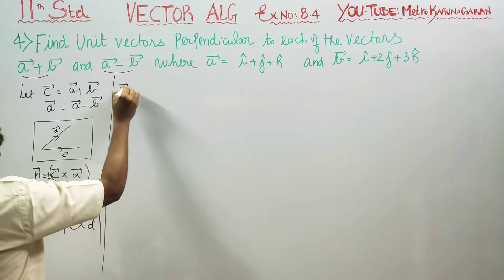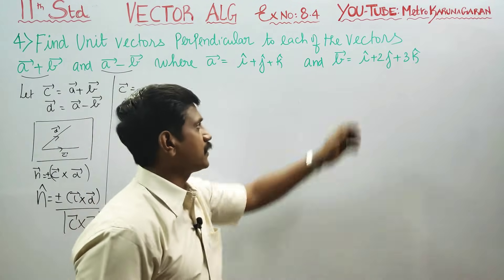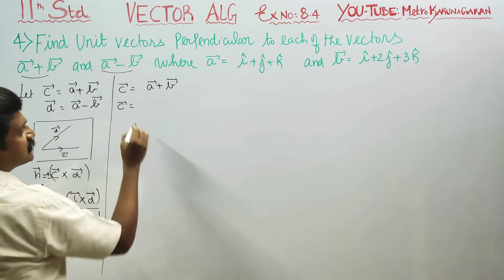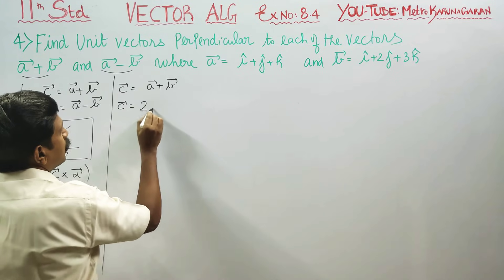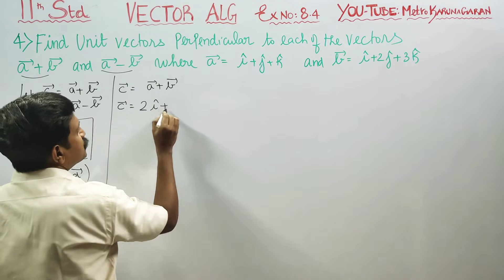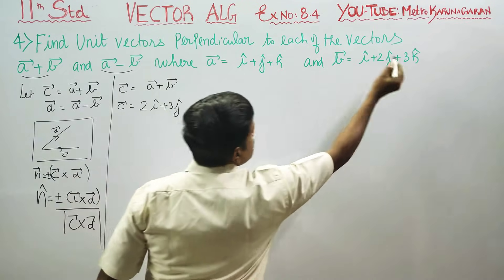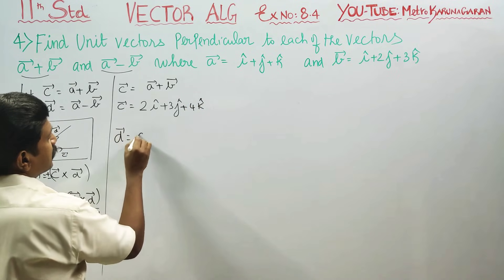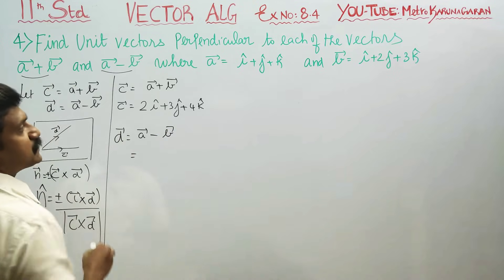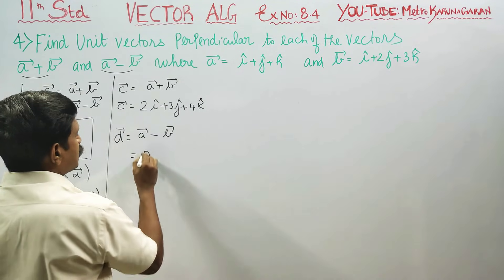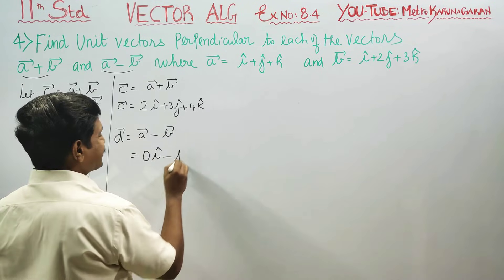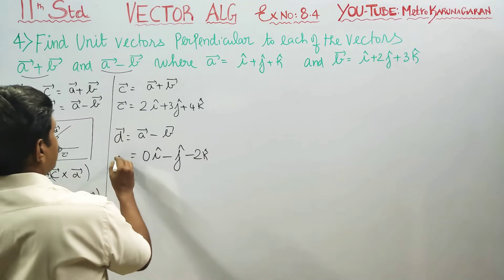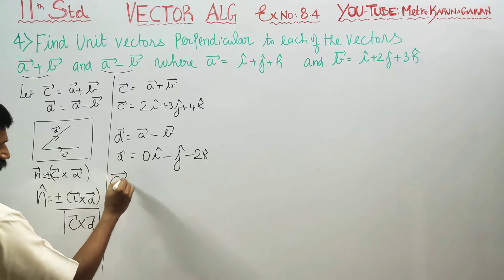First, what is a plus b? c vector is a plus b. Now for a minus b: 1 minus 1 gives 0i, 1 minus 2 gives minus j, and 1 minus 3 gives minus 2k. So d vector equals 0i minus j minus 2k. Now c is ready and d is ready, and we want to find c cross d.